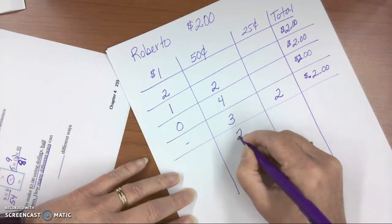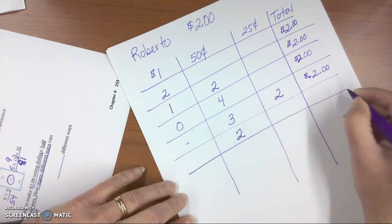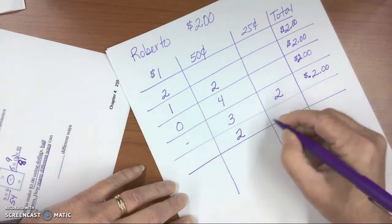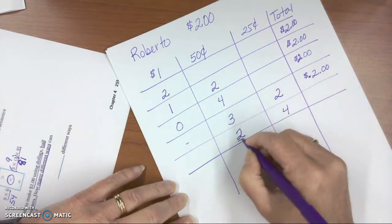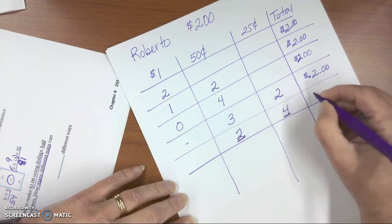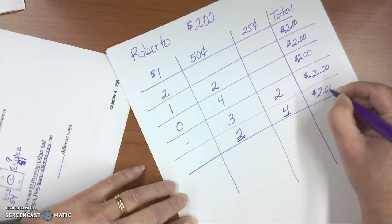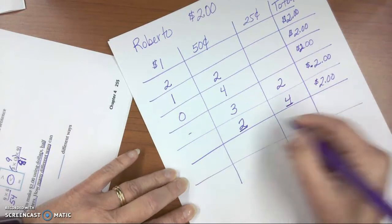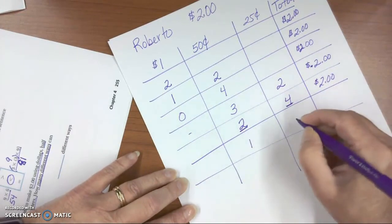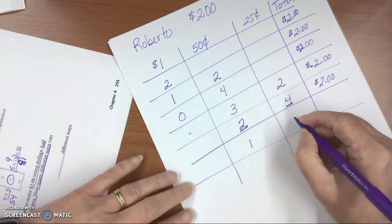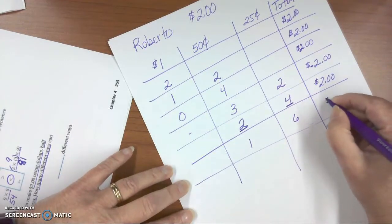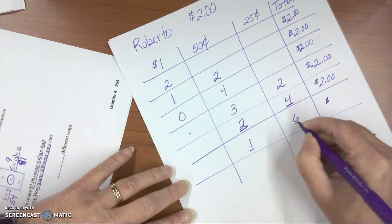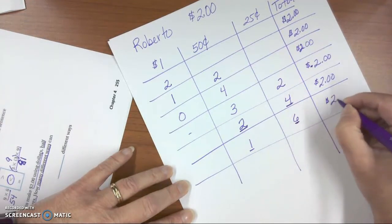So now I could use two 50-cent pieces, and that would mean I would have to use four quarters, because four quarters make a dollar, because two 50-cent pieces are a dollar. So that's $2. What if I only used one 50-cent piece? And then that would make me use six quarters, and so that would give me $2, because that's 50 cents, and then six times a quarter is $1.50, so that's $2.